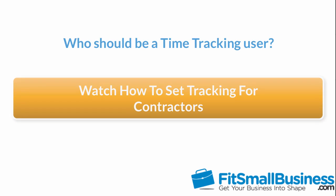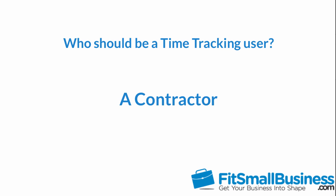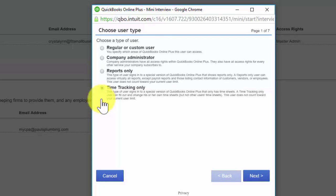And finally, the time tracking only user. In the advanced lesson, we walked you through how to set up tracking for contractors who need to report their billable hours. The time tracking only user is perfect for contractors because they only need access to QuickBooks to report hours that they worked and nothing else. We're going to go ahead and set up a bookkeeper who manages accounts receivable for Paul, so we'll select the regular or custom user option and click Next.